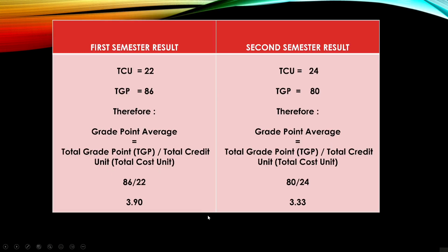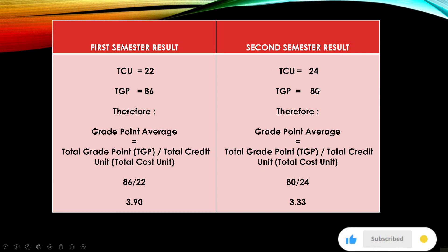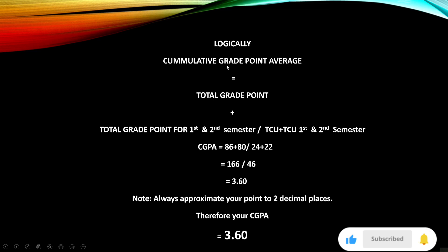Now we have the table displaying the first and second semester results together. For the first semester the total credit units was 22 and the total grade points (TGP) is 86. Therefore, GPA equals TGP divided by total credit units, which is 86 divided by 22, giving approximately 3.90 for the first semester — which is upper credit. For the second semester, it dropped from 3.90 down to approximately 3.2 to 3.3, which is not as strong. The grade points for the second semester are lower compared to the first semester.